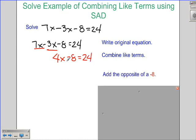My next step is to take care of this little guy, this minus 8. How do I do that? By adding 8 to both sides. That gives me 4x equals 24 plus 8 is 32.